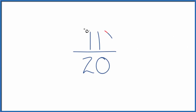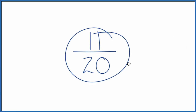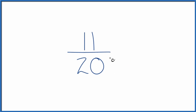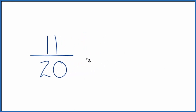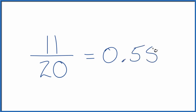Let's write the fraction 11/20ths as a decimal. There are two ways we could do this. We could just divide 11 by 20 on our calculator and we'll get 0.55. So that's one way to do it.